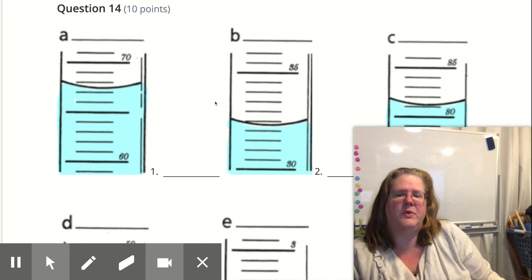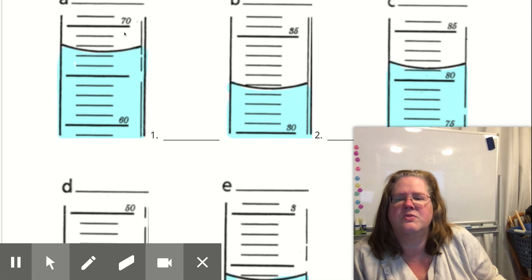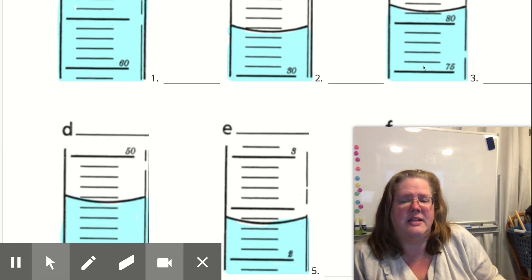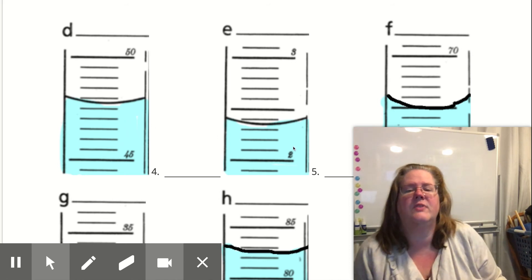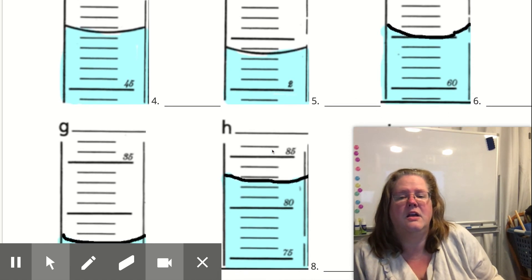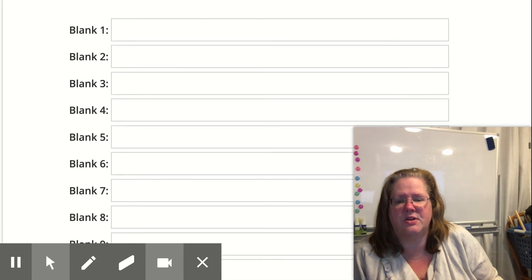You're going to go ahead and read the meniscus on these. Now be careful. This goes from 60 to 70, that goes by ones. This goes from 30 to 35, so this is going by 0.5. This is going from 75 to 80, that's going by one. This one's going from 45 to 50, that's 0.5. And this goes from two to three, these are going by tenths. So make sure you're looking at what my units are to figure out what your answers are going to be.